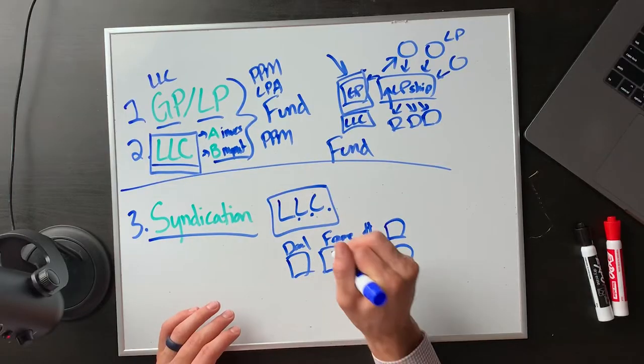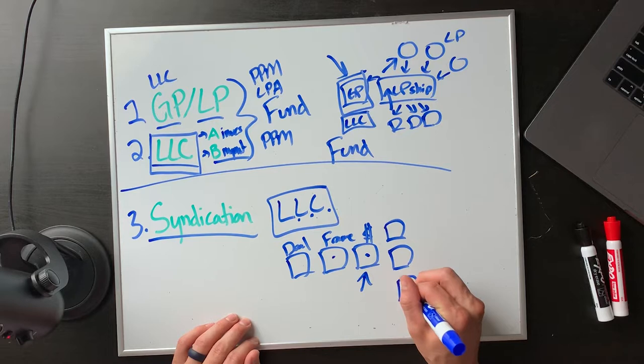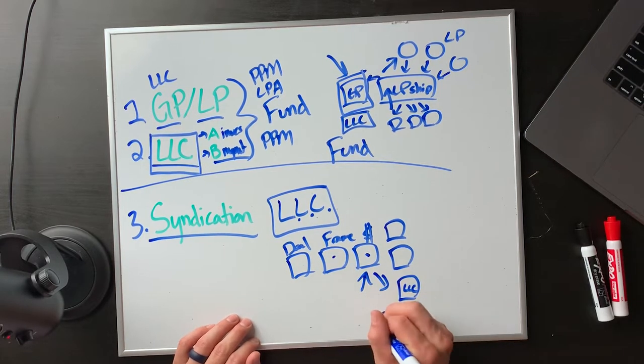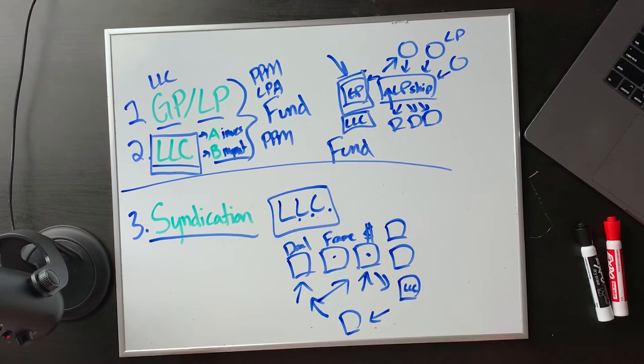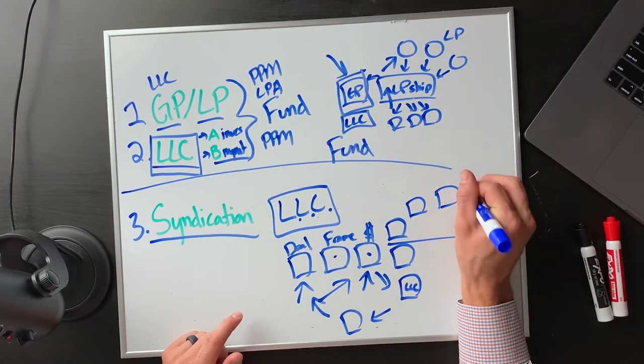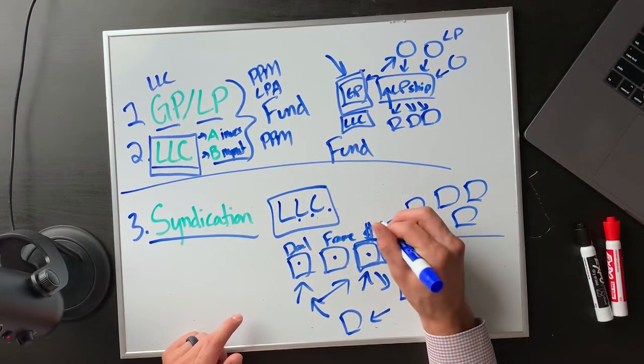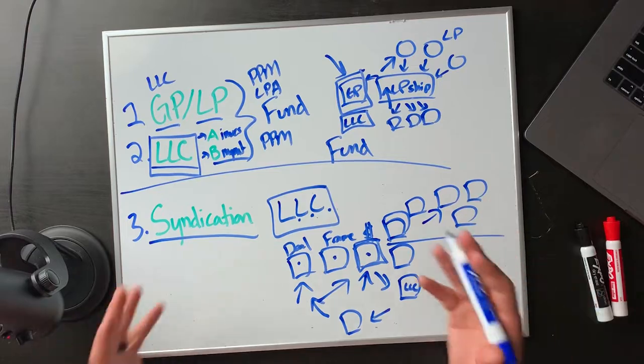The syndication loop is best illustrated by real estate flippers — they're masters at syndication deals. They find a great house, pitch their investors, follow the fund launch formula, set up an LLC, investors put money into the LLC, they do the deal, and everyone gets paid out. Then they go find another deal, set up a new LLC with new or returning investors, and do it again. The fund model is beautiful because you set it up once, raise money once, and can do as many deals as you want.